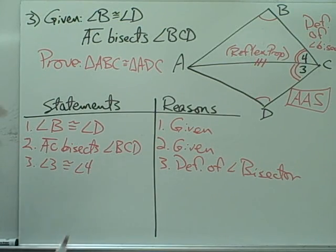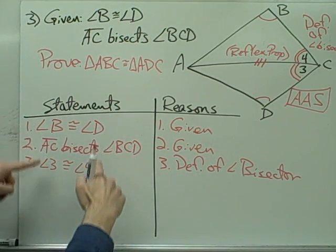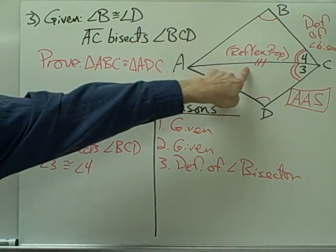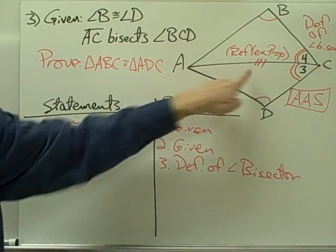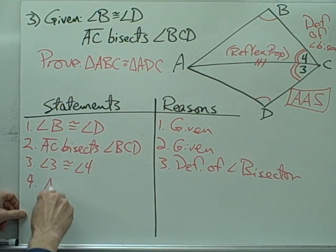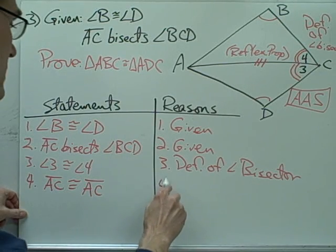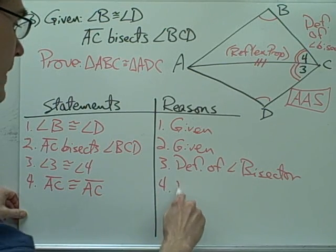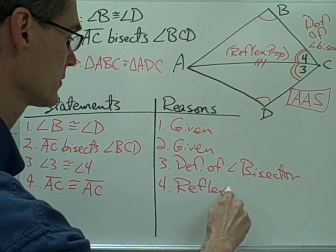So I have this pair of angles congruent and this pair of angles congruent. I need my side for my angle-angle-side postulate, so I can say segment AC is congruent to segment AC, and that's by the reflexive property of congruence.